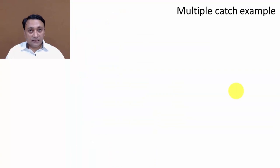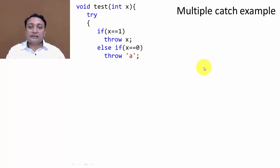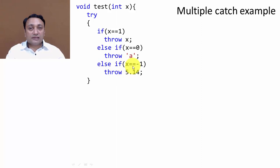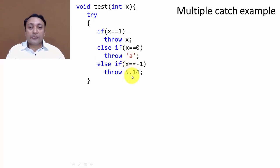Next let us discuss the multiple catch example. Here I have the same function test with argument X. I am checking: if X equals one, throw X as an integer; else if X equals zero, throw a character exception; and if X equals minus one, throw a float or double exception. So we have three types of throw statements — integer, character, and double.